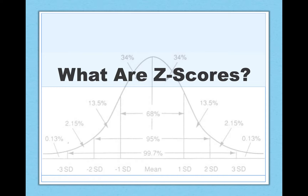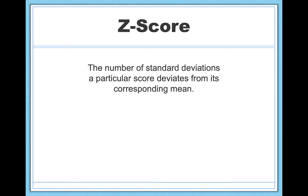A z-score is simply a transformation of data. We can take a person's raw score and transform it into a z-score, which is easier for us to interpret. A z-score is simply the number of standard deviations a particular score deviates from its corresponding mean.